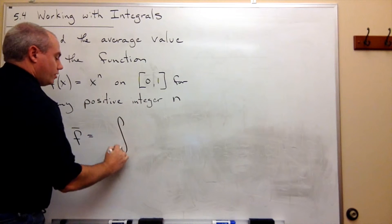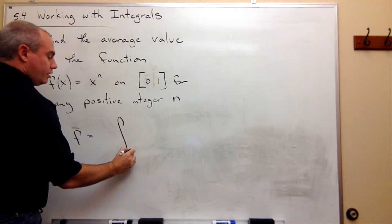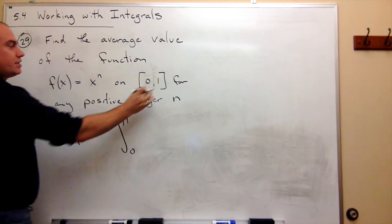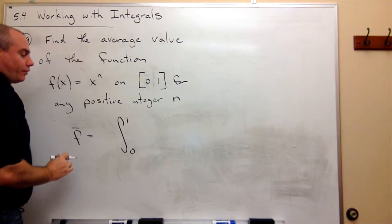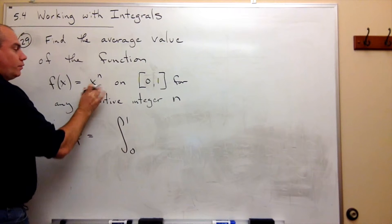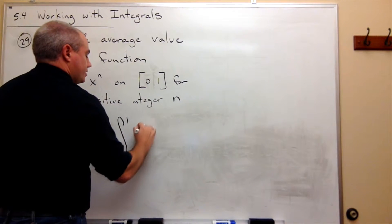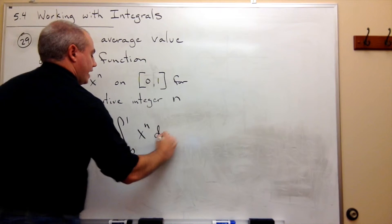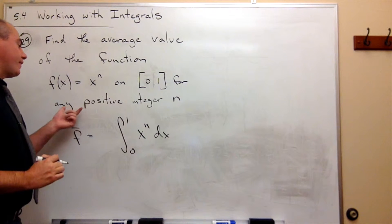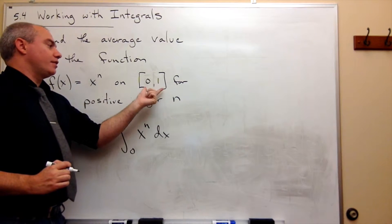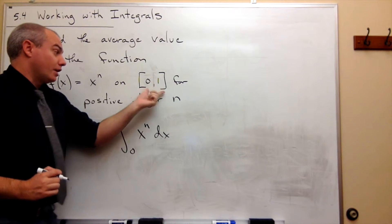is it's going to be the integral from 0 to 1, use the endpoints of my interval, of the function, which is in this case x to the n dx. But to get the average value, I need to divide by the length of the interval.